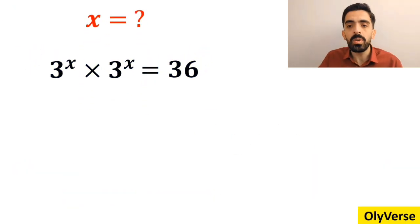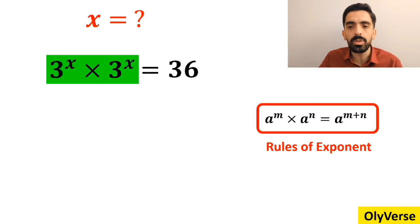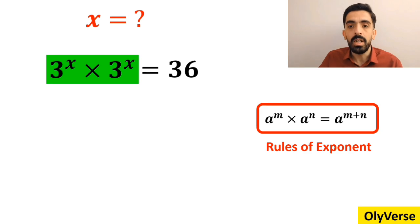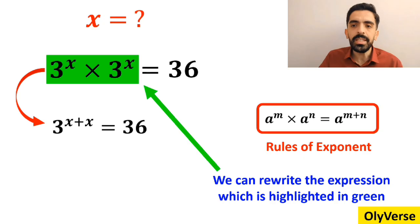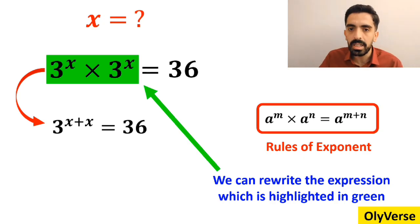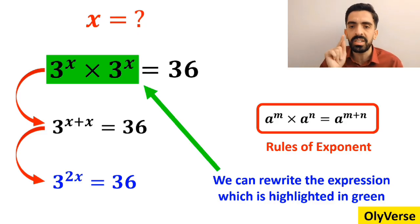According to the rules of exponents, a to the power of m times a to the power of n is equal to a to the power of m plus n. So we can rewrite the expression highlighted in green as follows: 3 to the power of x plus x is equal to 36. And this simplifies to 3 to the power of 2x is equal to 36.